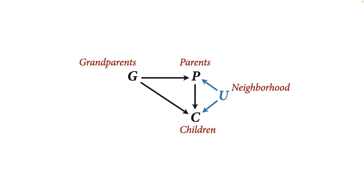Think back to the introductory causal inference lectures — the example of grandparents' education influencing the education of their own children and grandchildren. I introduced the idea of this haunting that neighborhoods induce shared exposures between parents and their kids, and this stops us from doing a mediation analysis measuring the direct effect of grandparents on their children. But if we have families in the same neighborhoods, then we have repeat observations on those neighborhoods, and we can use varying effects estimates to estimate those unmeasured features of neighborhoods.